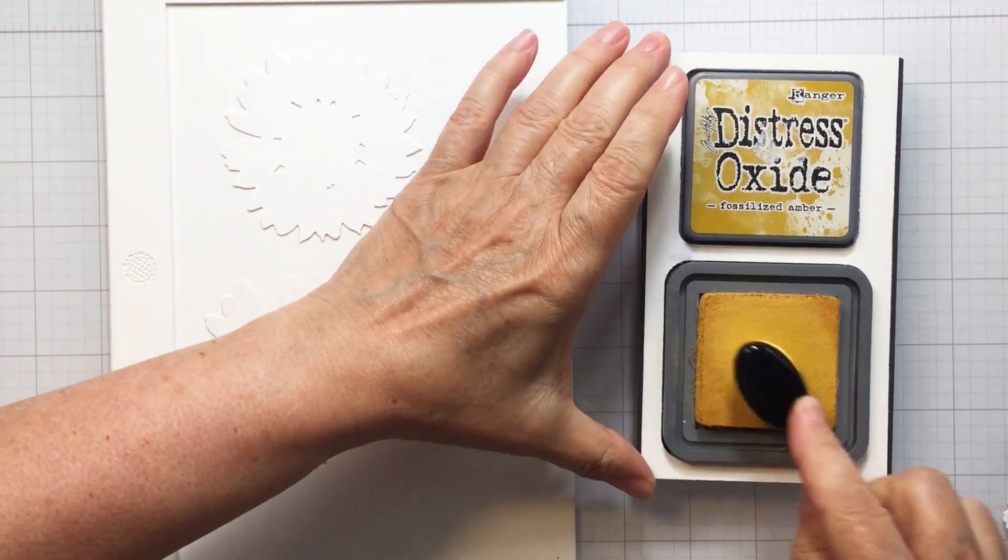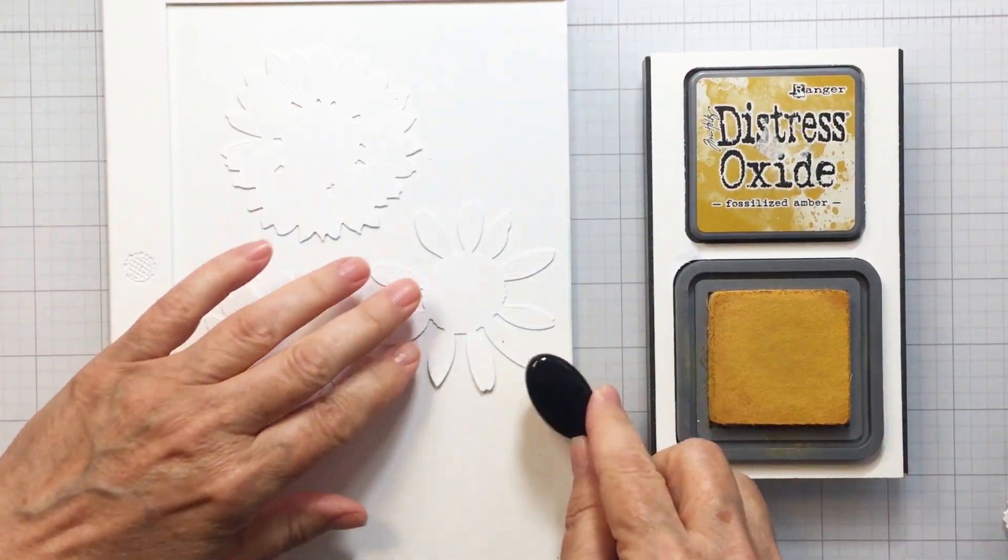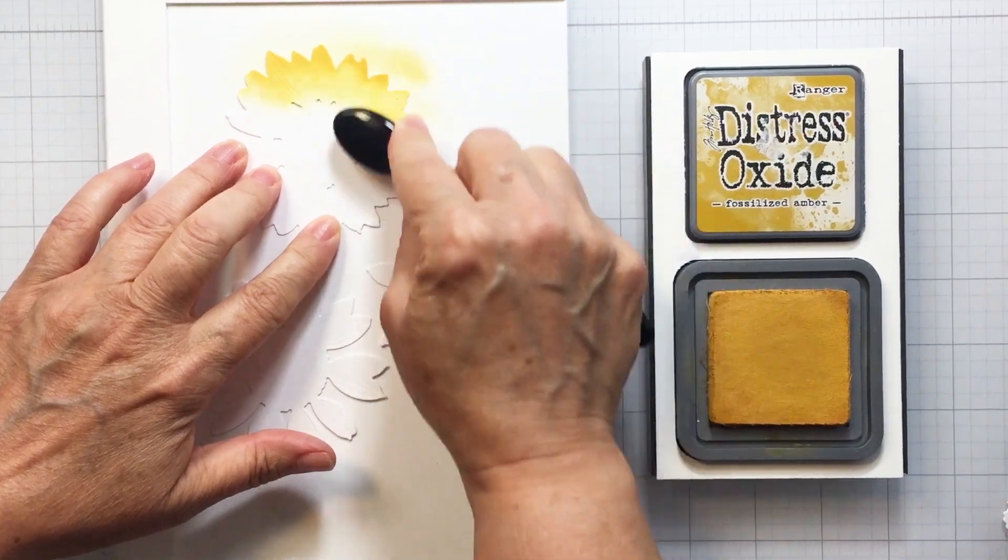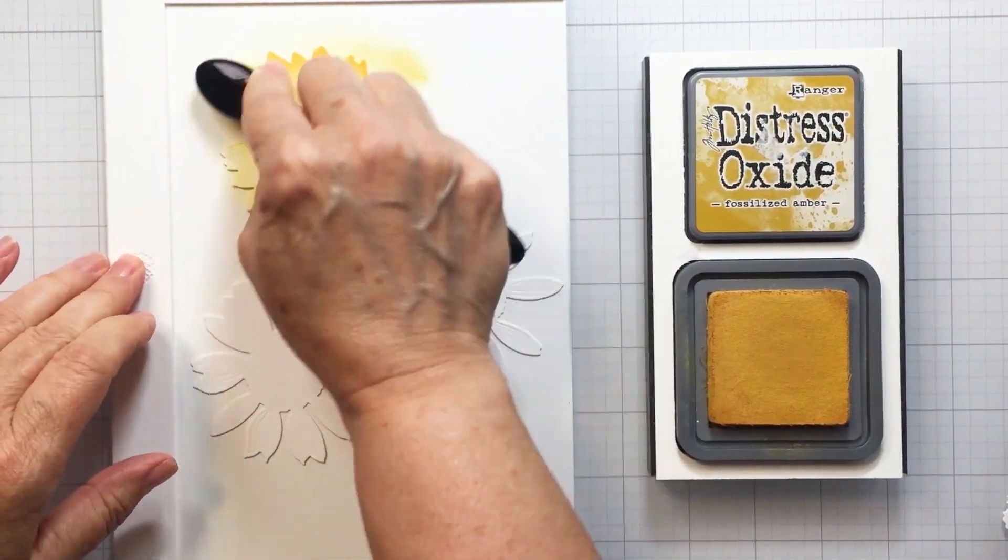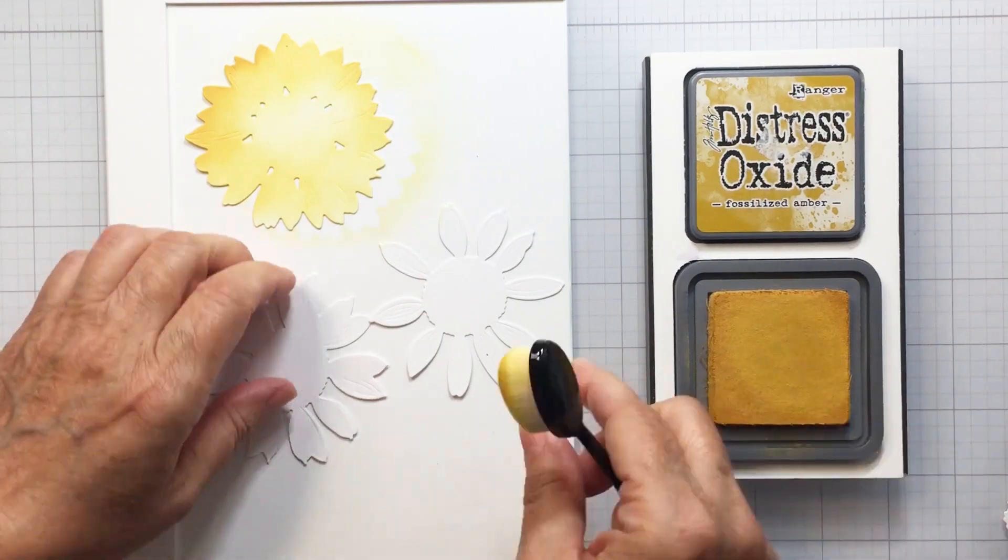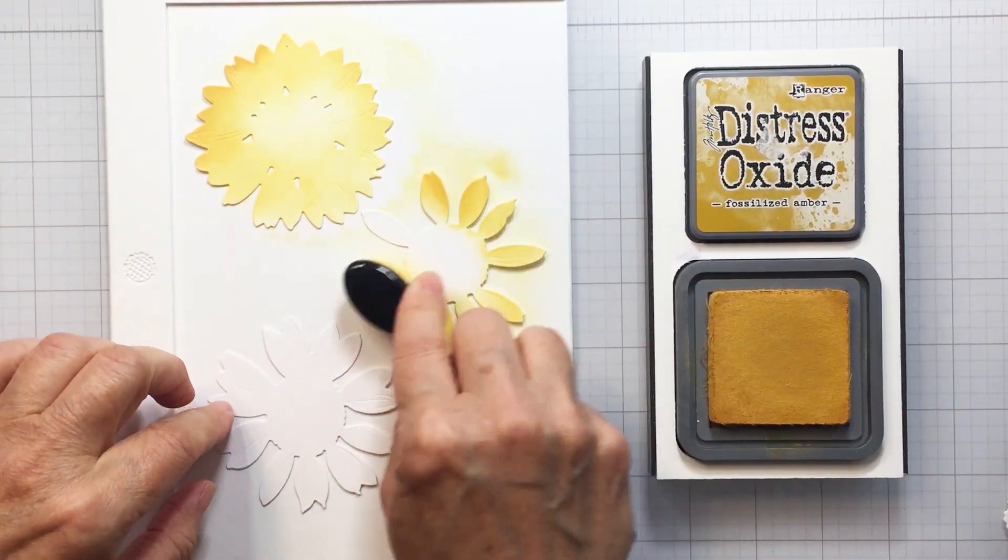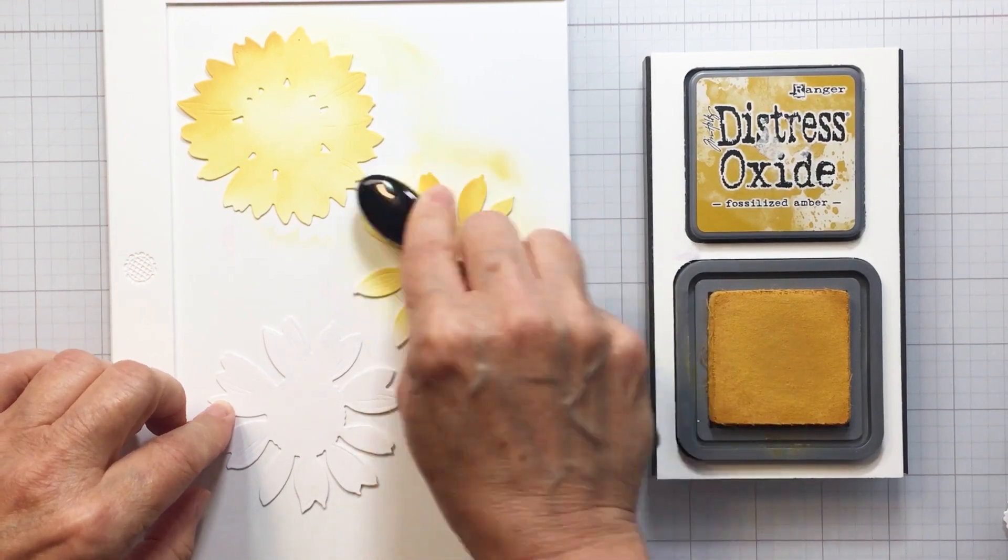Now I'm going to start to create some color on my sunflower die cut pieces with some distress oxide inks. I do have those over to the right there so you can see the colors. I'm blending with my Honey Bee Stamps detail blending brushes and I'm just starting off with a base layer here in just a really nice soft, rustic-looking yellow color.